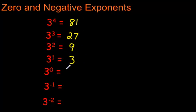You take the 3 and divide by 3. And what do you get? You get 1. And sure enough, 3 to the exponent 0 is 1.